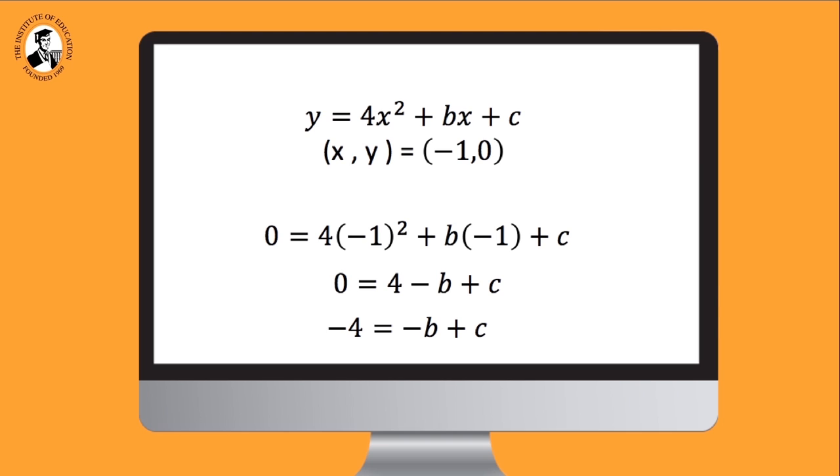Just so that the two equations that we're going to use are formatted the same way, we'll move that 4 to the left hand side. So minus 4 is equal to minus b plus c.